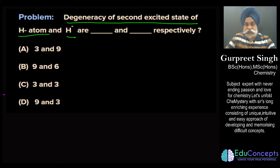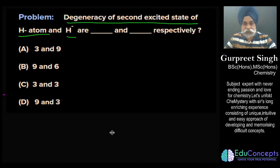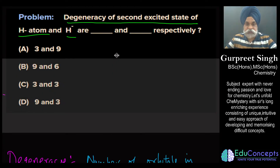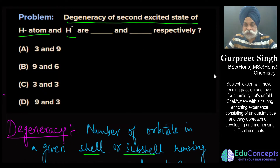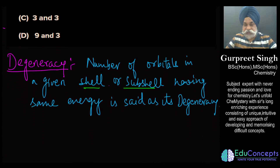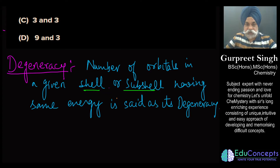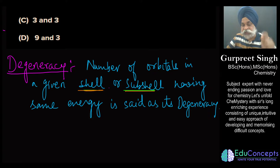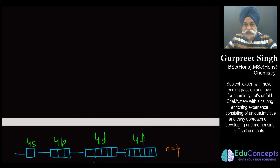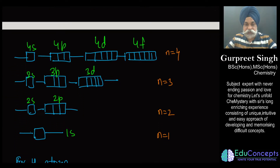This is a question where the degeneracy of the second excited state of a hydrogen atom and H⁻ is being asked. First, let us understand what we exactly mean by degeneracy. Degeneracy simply means the number of orbitals present in a given shell or sub-shell having the same amount of energy.